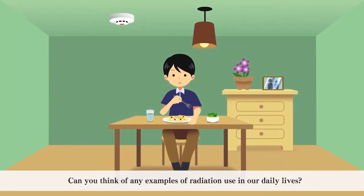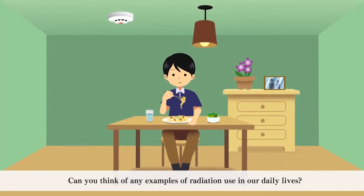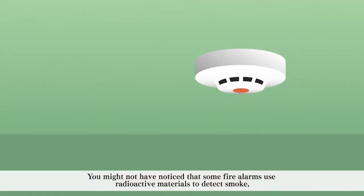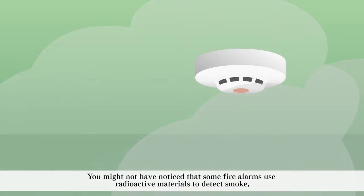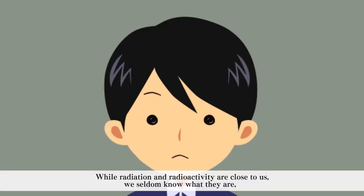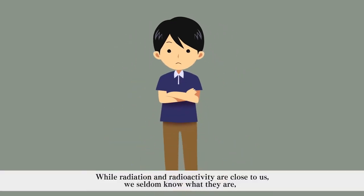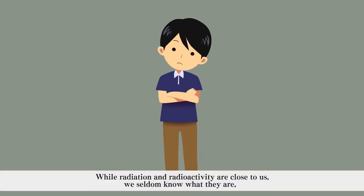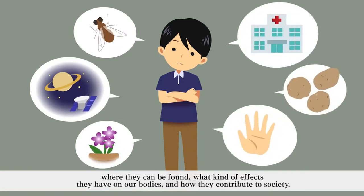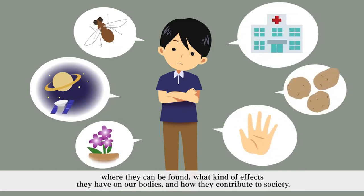Can you think of any examples of radiation use in our daily lives? You might not have noticed that some fire alarms use radioactive materials to detect smoke, and some types of colorful flowers are bred using radiation. While radiation and radioactivity are close to us, we seldom know what they are, where they can be found, what kind of effects they have on our bodies, and how they contribute to society.